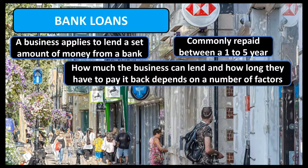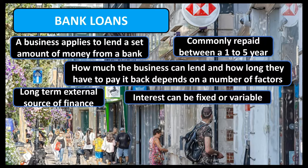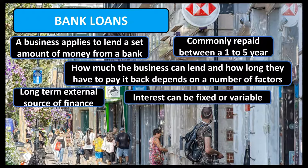Bank loans are commonly agreed and repaid over a 1-5 year period but can be longer if both parties agree. Therefore, it is classed as a medium to long term external source of finance. The interest on the bank loan can be set at a fixed rate at the time of the loan agreement, such as 7.9% APR, which will be the set amount of interest charged until the loan has been repaid. Alternatively, the business may choose to have interest charged on a variable basis, meaning the amount of interest charged will vary over time according to changes in the market. When things are going economically well in terms of growth and inflation, interest rates are likely to increase to discourage spending, whereas in economic downturns such as a recession, interest rates are often cut to encourage spending.